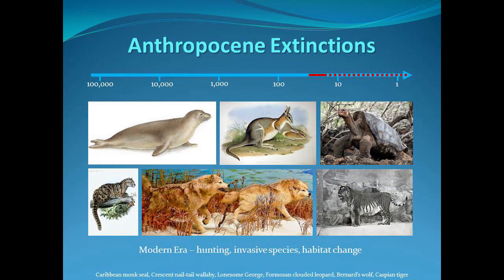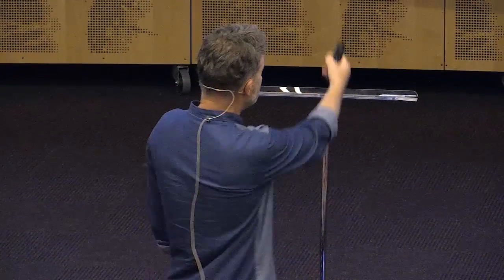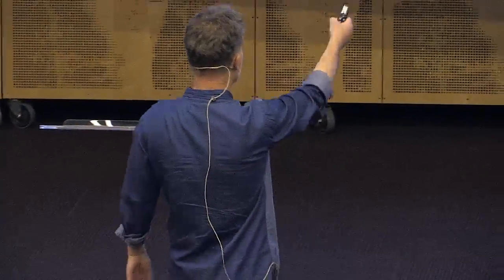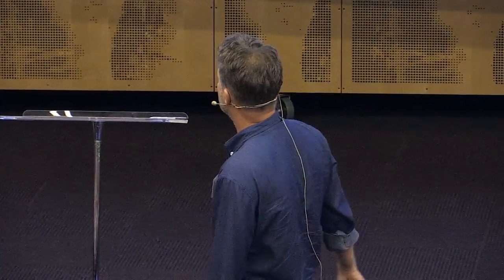Then we have the modern era. Lonesome George - the last of this particular species of tortoise - but also monk seals, crescent nail-tailed wallabies, clouded leopards, Bernards wolf, Caspian tiger. They've all gone extinct very, very recently, since the beginning of the Great Acceleration.